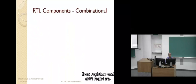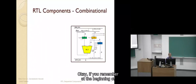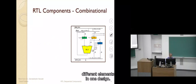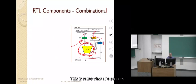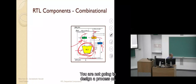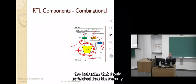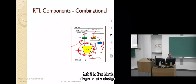If you remember at the beginning of component-based design, I showed you that there are different elements in one design: registers, a bus, a combinational part, and sequential parts. This is a view of a processor — it has an ALU, a program counter. You are not going to design a processor, but these are its elements. The program counter shows the instruction that should be fetched from memory. It is another course, but this is the block diagram of a design.